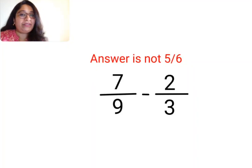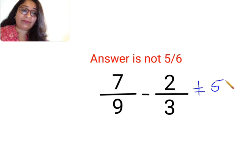Welcome everyone. So today we are going to understand why the answer for this fraction 7 upon 9 minus 2 upon 3 is not equal to 5 by 6.